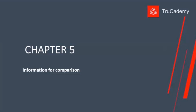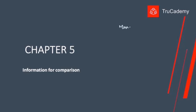Today let's start with Chapter 5: Information for Comparison. In management accounting, a cost accountant will generate all the information required by managers and communicate it to them so that managers can use it for planning, controlling, and decision making.